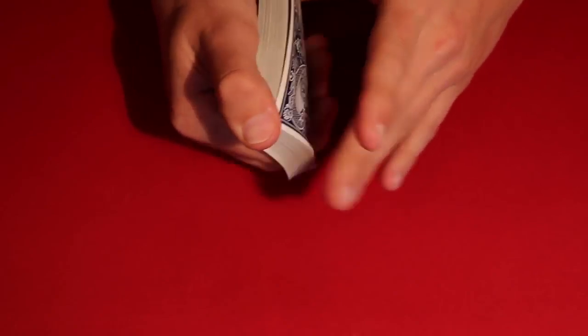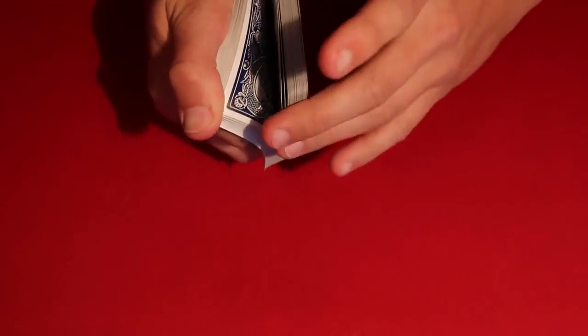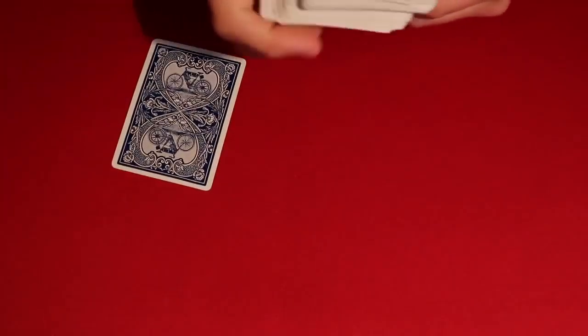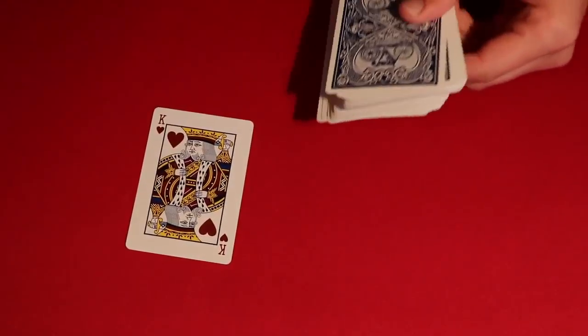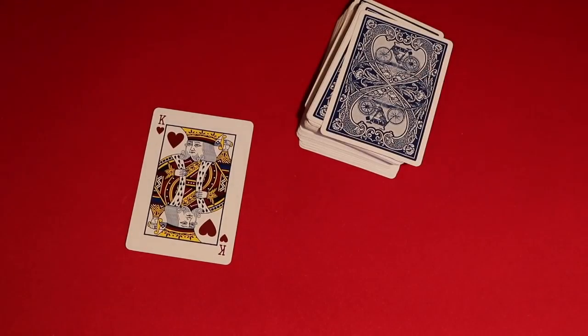So you go ahead and you say all right, go ahead and tell me when to stop for another time. And let's say the spectator goes through, they say stop right around here. You take the card out and this should be the spectator's chosen card, and that is the trick. And then I'll show you guys how to do it.